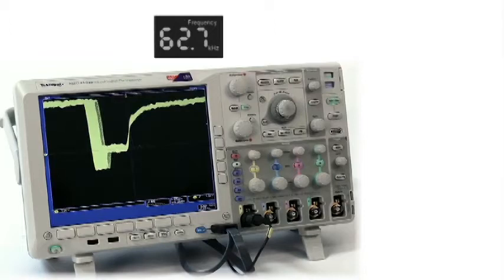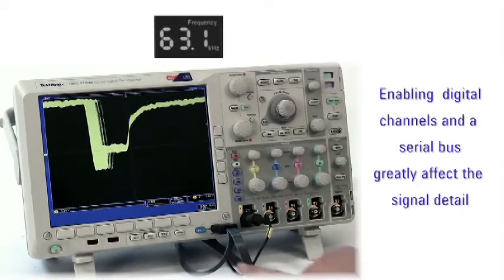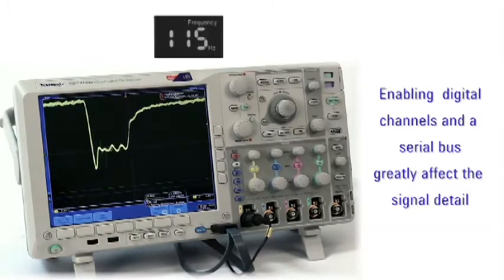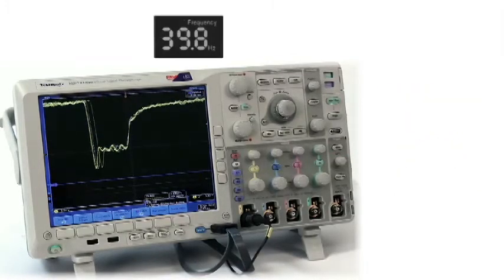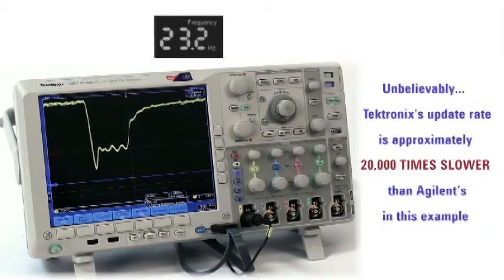Now let's look at the Tektronix scope. As we enable digital channels in a serial bus, notice how the glitches and jitter have basically disappeared. The update rate has dropped significantly to just 30 waveform updates per second.